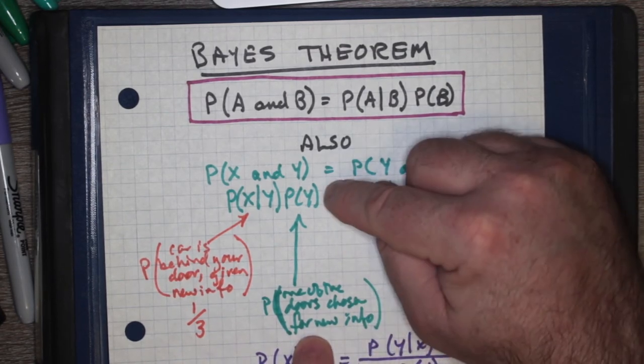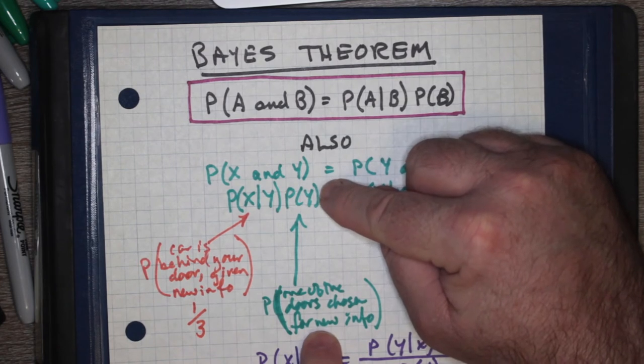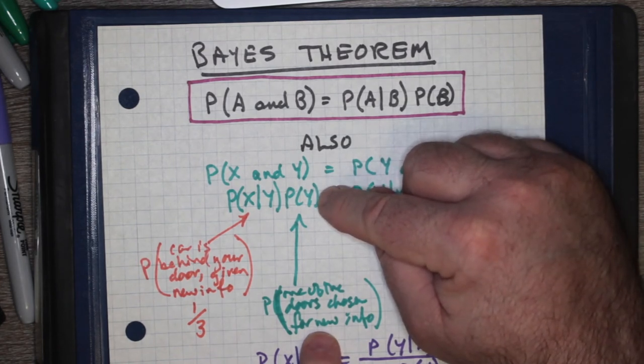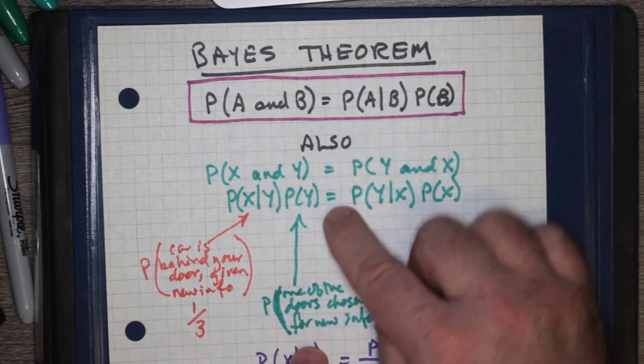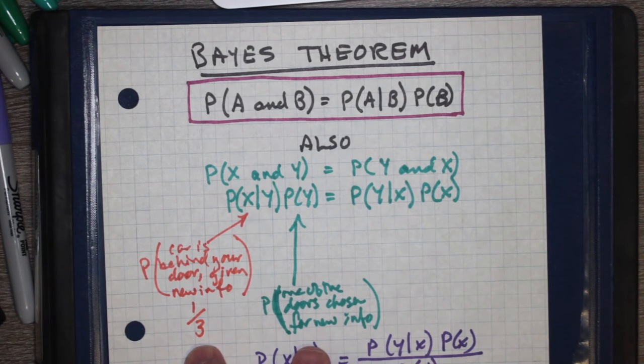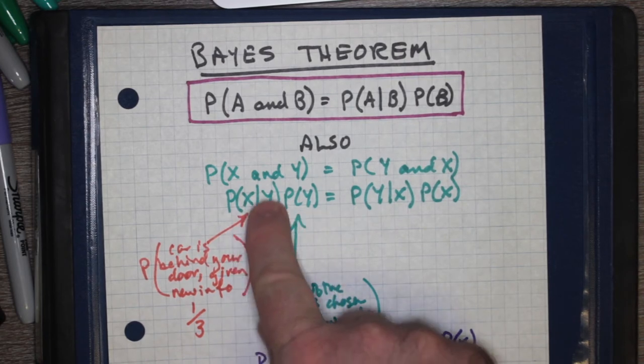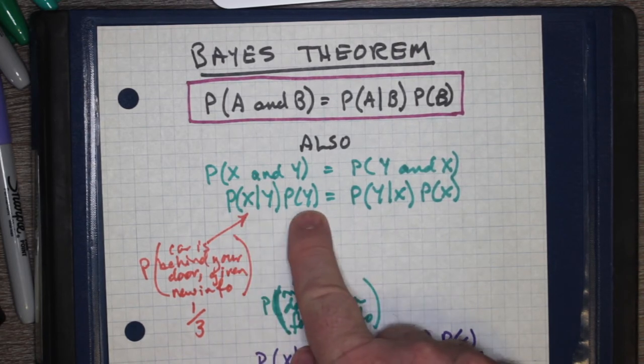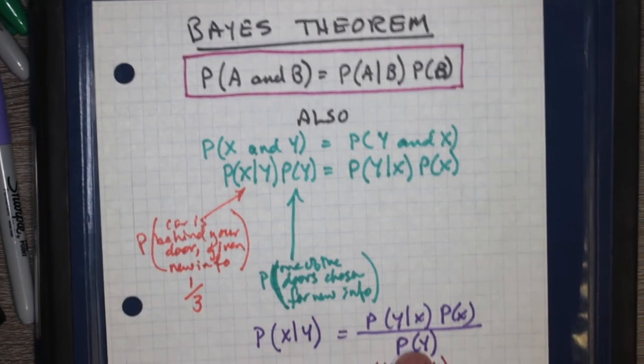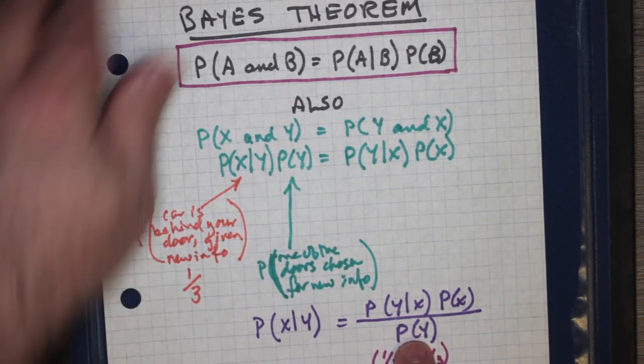So here's the probability Y, P(Y), that Monty Hall chooses one of the doors for showing you the new information. If we now solve, this is the one we want to show. I'm saying that it's one over three, that this probability doesn't change, but let's show mathematically that it doesn't change. So what we're going to do is we're going to isolate this term. We're going to divide both sides by P(Y), and so this is what we get. We get this equation here.